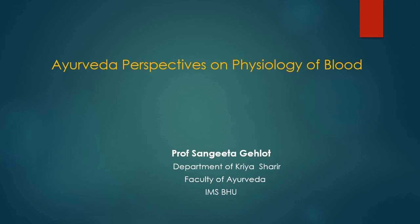Rakta Dhatu has been considered to be the most vital among the seven tissues since it is mentioned as Pranayatan. The word Rakta Dhatu is derived by adding the krit prefix in Ranjidhathu. Amar Koshkar has described the synonyms of Rakta as Rudir, Lohit, Ashraj, Shataj and Sonit.